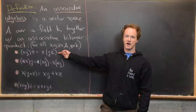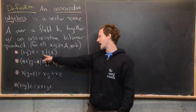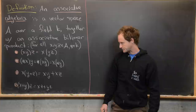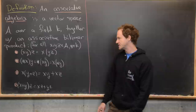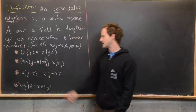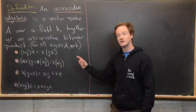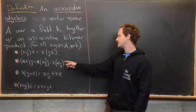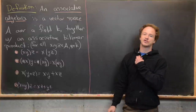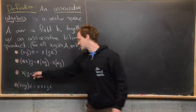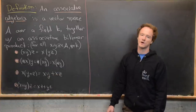We've got associativity of the product: x times y, then times z, is the same as x times y times z. We also have the fact that we can factor out scalar multiplication: alpha x times y equals alpha times xy, which equals x times alpha y. Notice this is not commutativity — it's just being able to factor out a scalar multiple. Then we have the two distributive rules: x times (y plus z) gives xy plus xz, and (x plus y) times z gives xz plus yz.